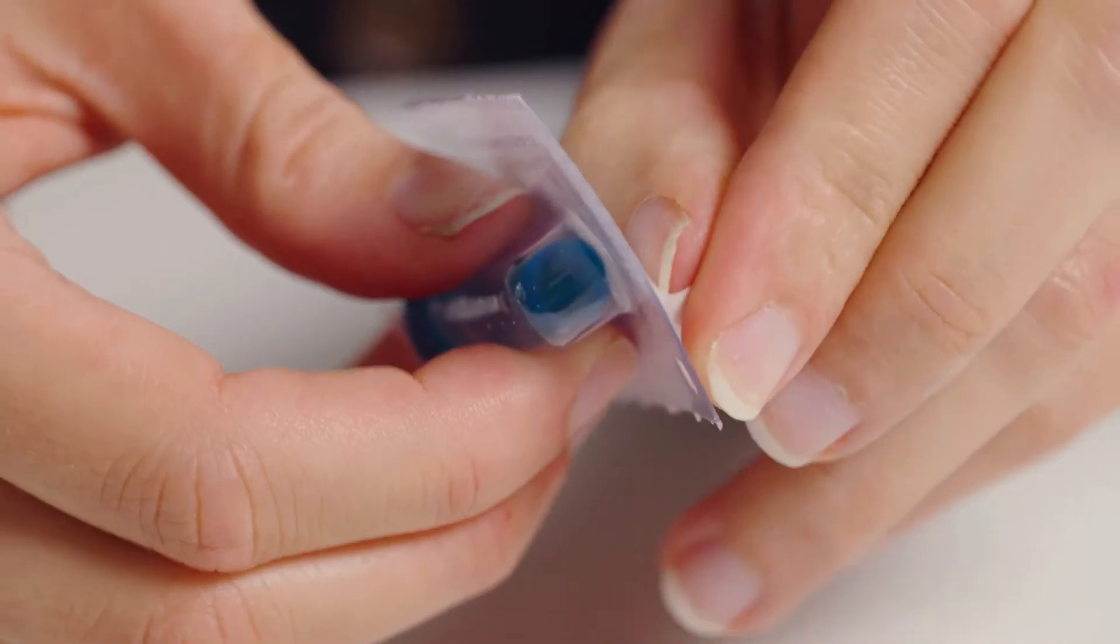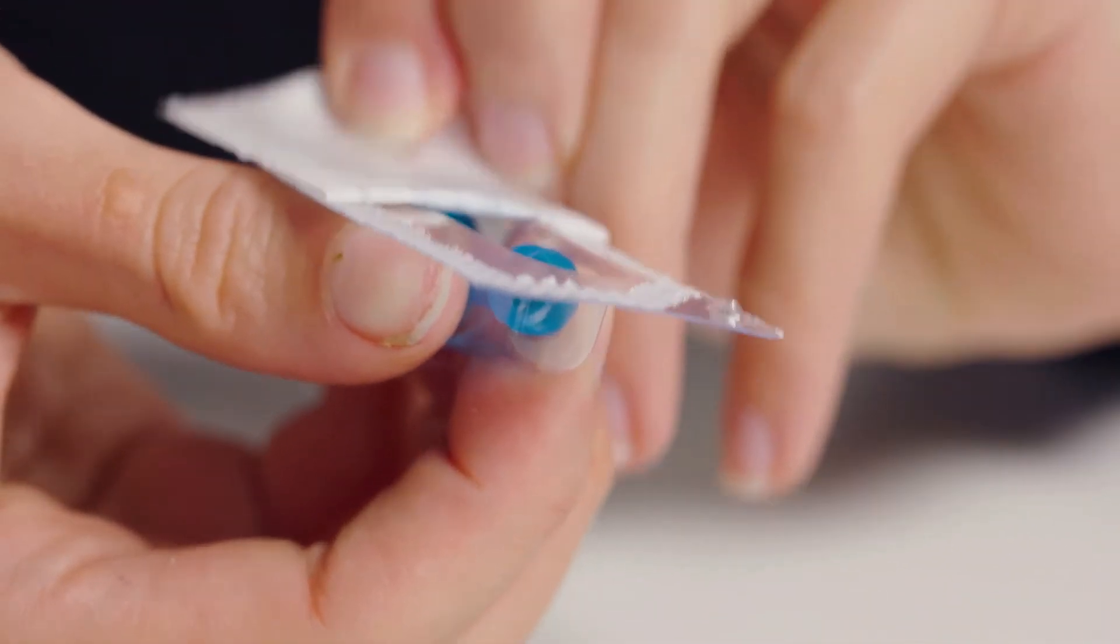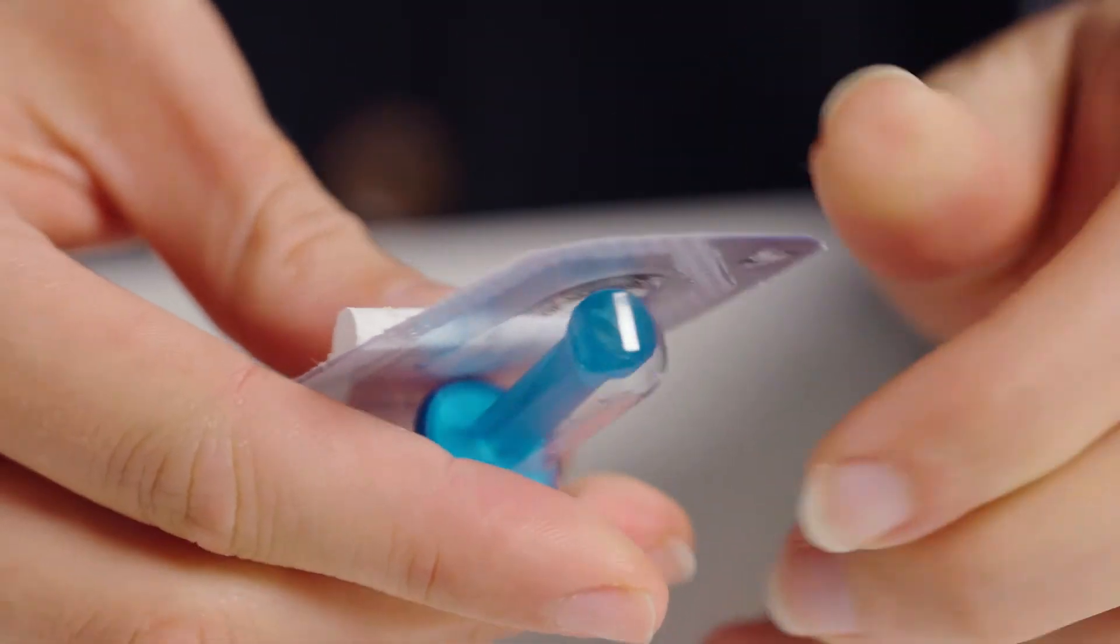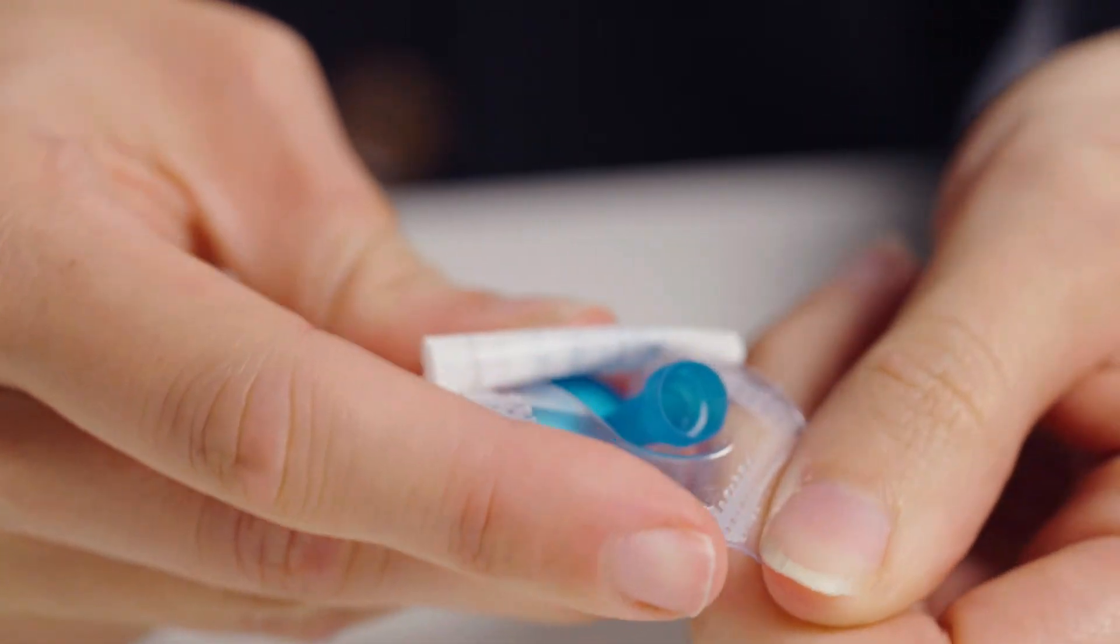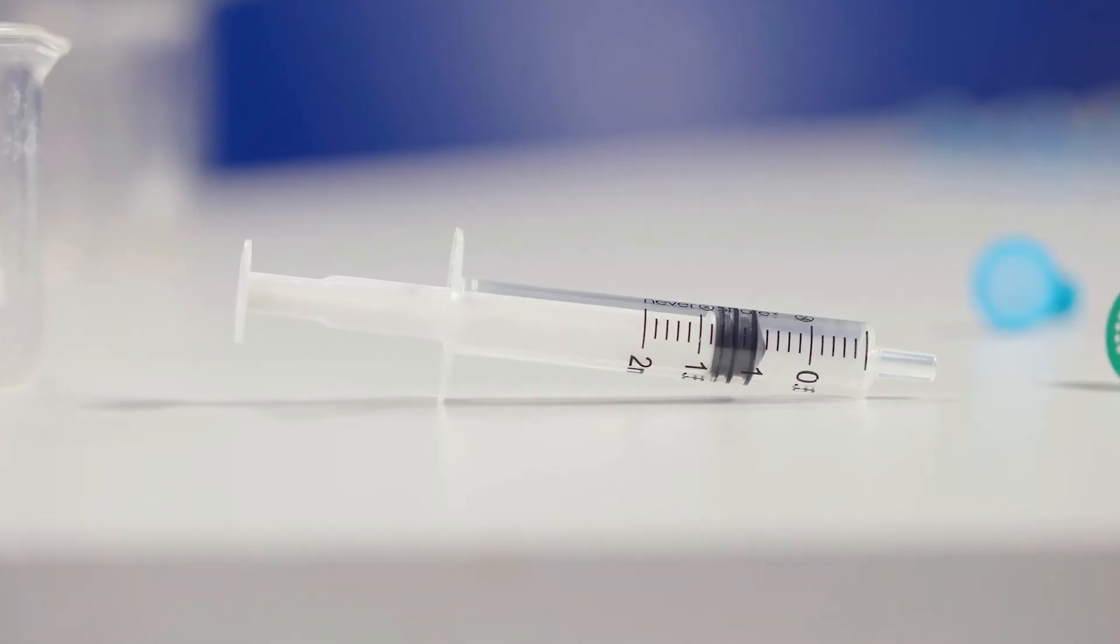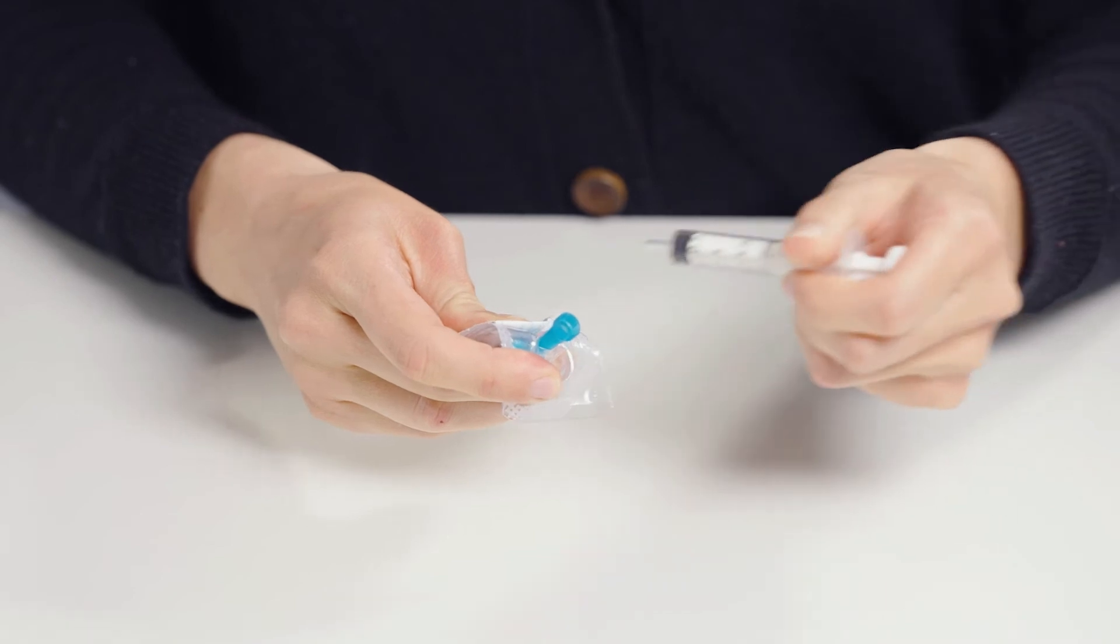SteriFilt comes in sterile packaging. To use, gently remove the paper lid, then tilt the SteriFilt while making sure not to touch it directly with your fingers. It is important to always avoid touching the filter to prevent contamination with bacteria on your hands.